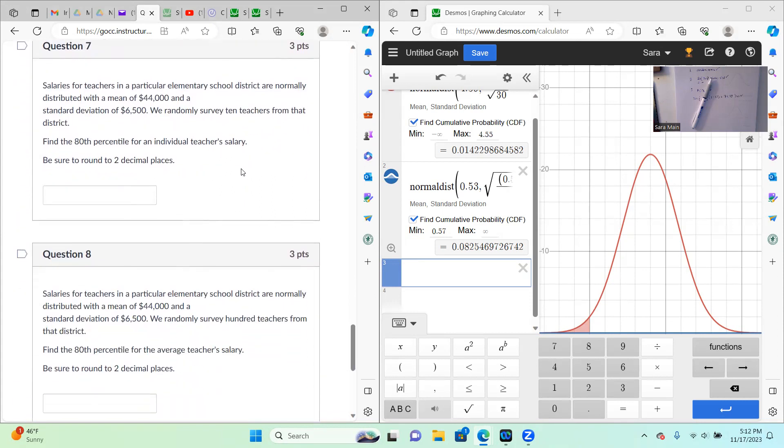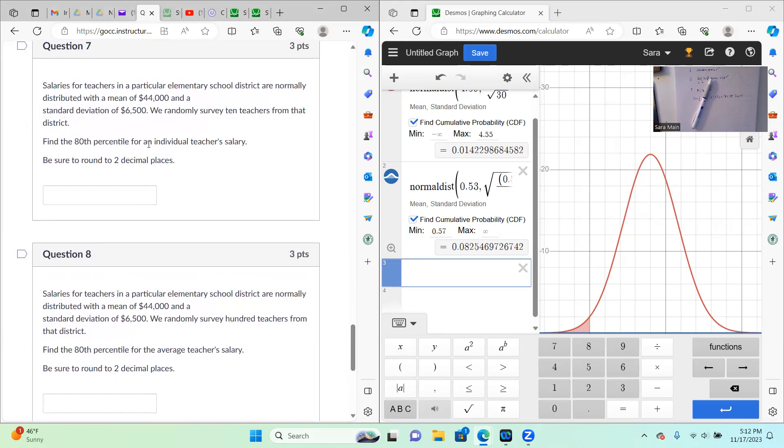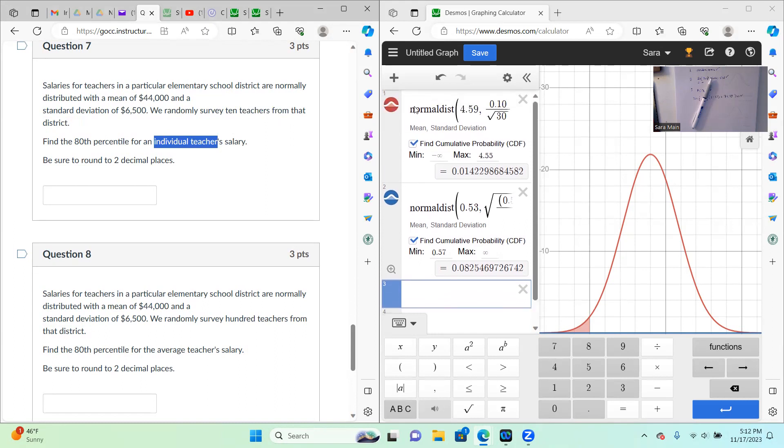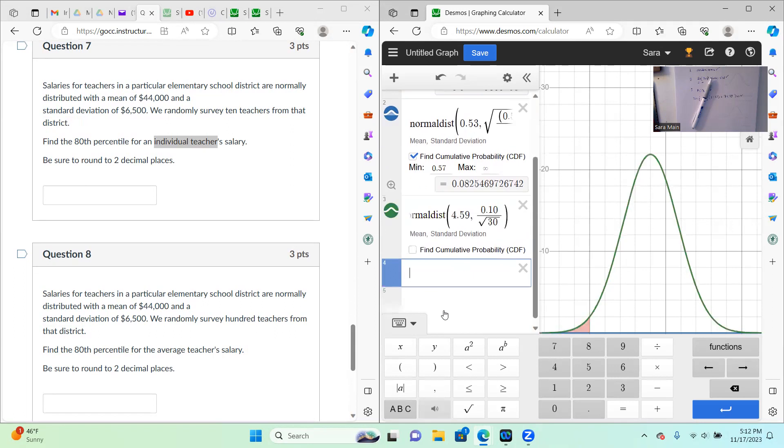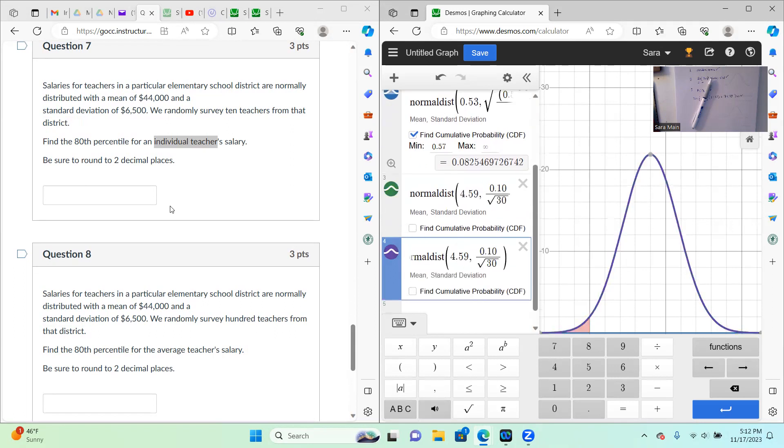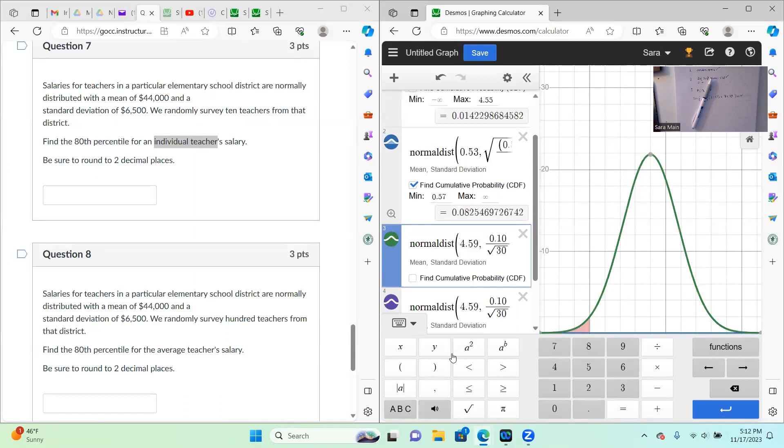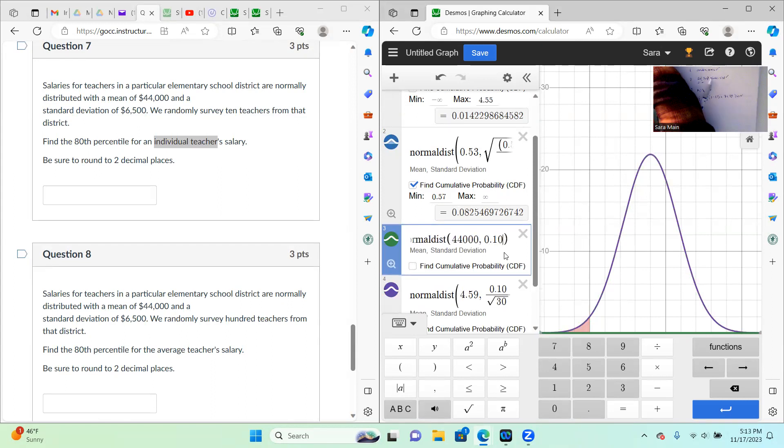And then on 7 and 8, the big things here are that number 7 is for an individual. So that means I am going to copy this. And 8 is for a sample. 7 is for an individual. So 7, I'm putting in. I don't have to use my square root. I just use my mean and my standard deviation.